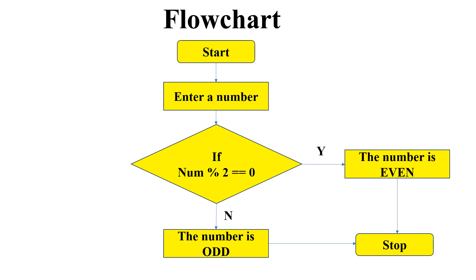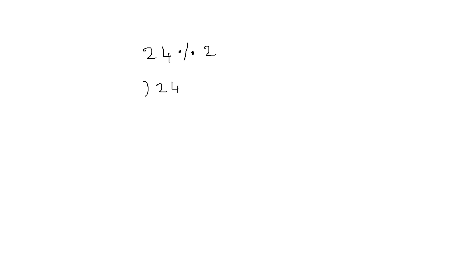Let's consider the example of the number 24. We know 24 is an even number, so let's test it: 24 modulus 2. We divide 24 by 2, the quotient is 12 and the remainder turns out to be 0. Since all even numbers have a remainder of 0, we conclude that 24 is an even number.